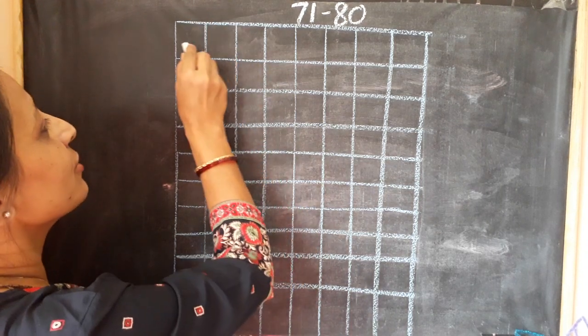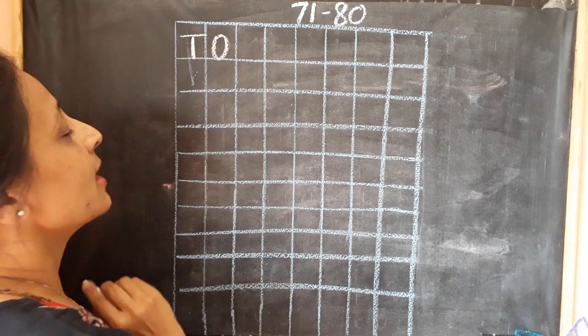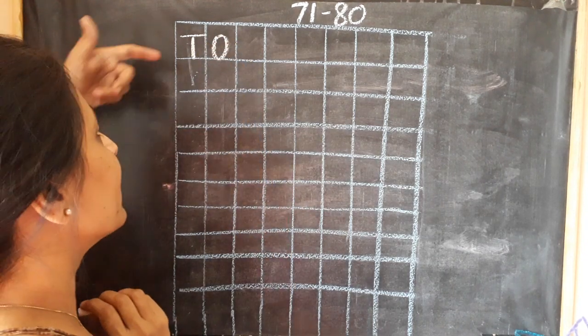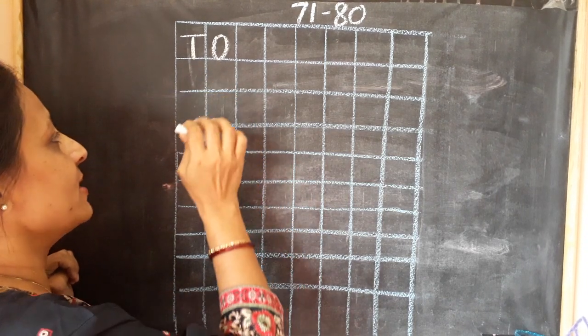First of all, we are going to write T and O. As you know, T represents 10s and O represents 1s.